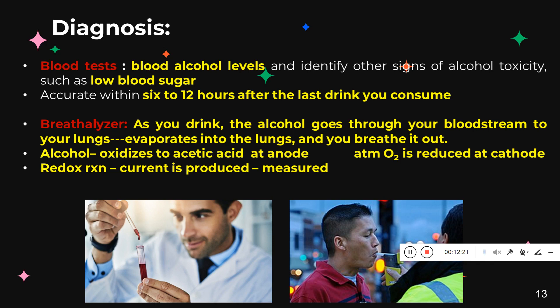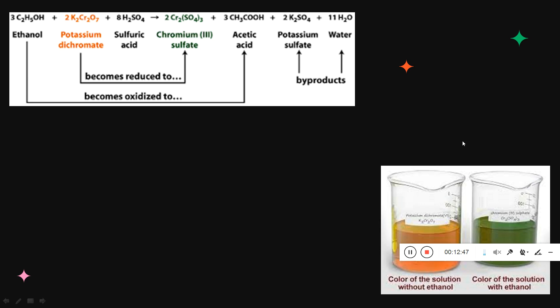Because of this redox reaction, a current is produced. When there is more alcohol in your breath, there is more redox reaction happening, and thus more current is produced. The higher the value of current, the higher the amount of alcohol consumed. This is how police determine whether a person has been drinking.